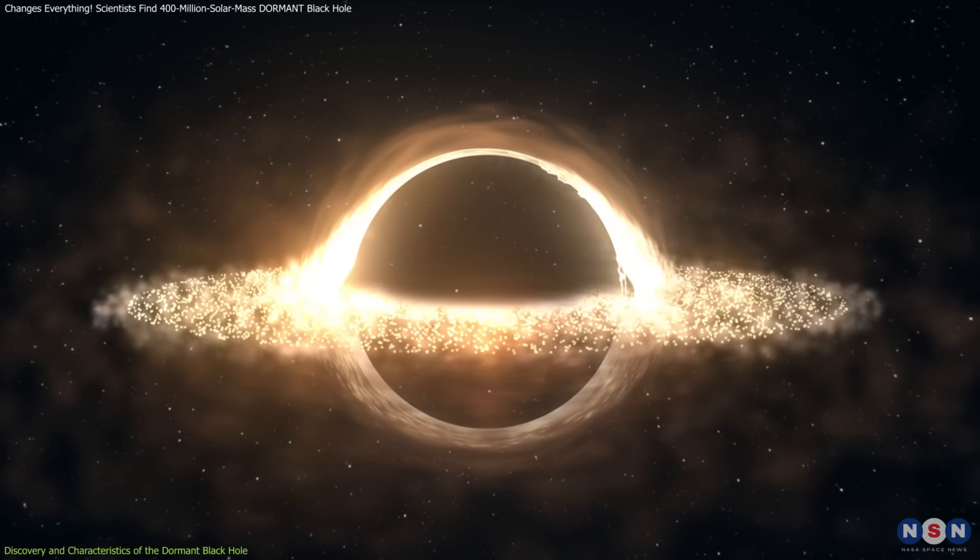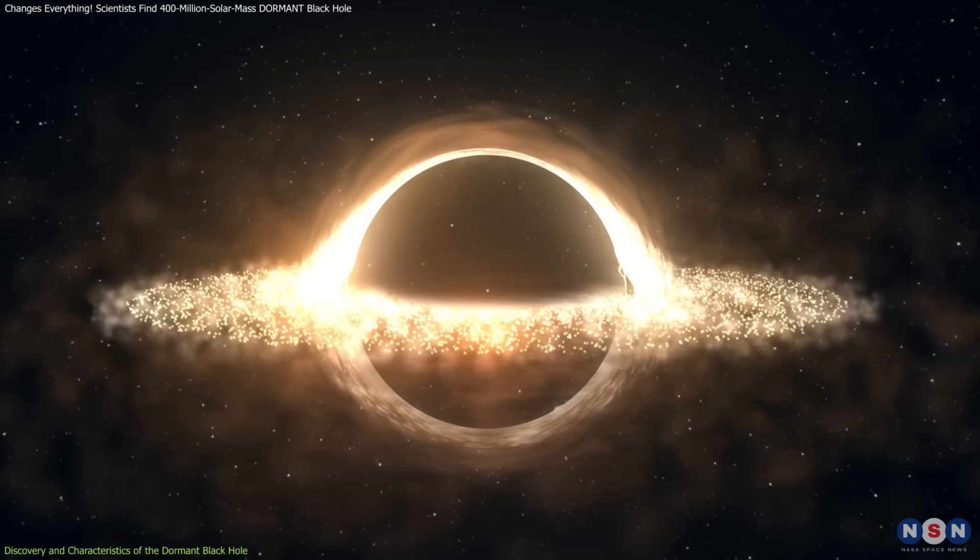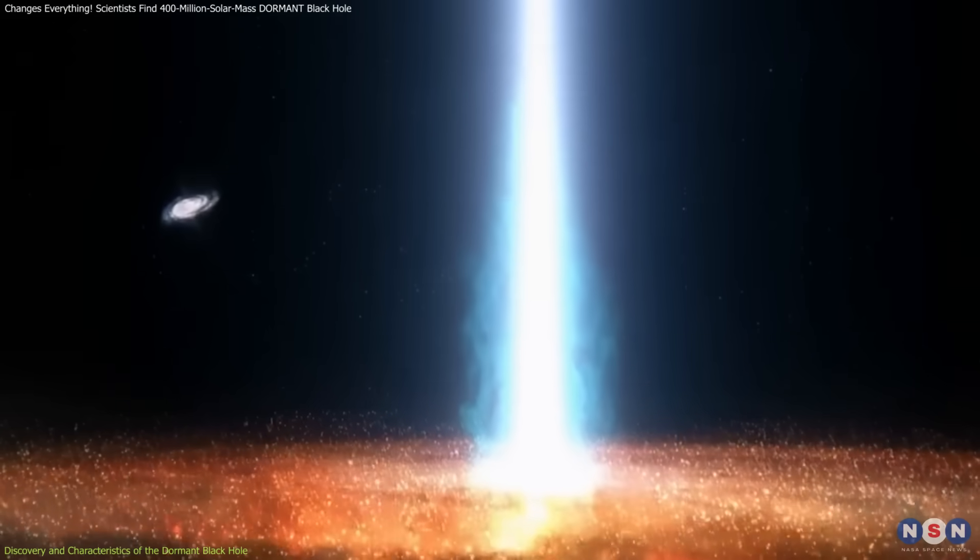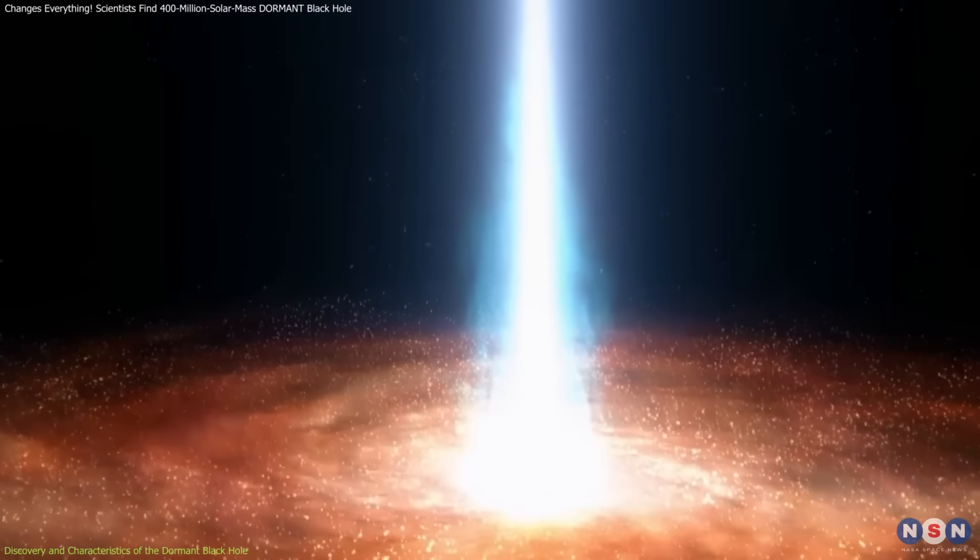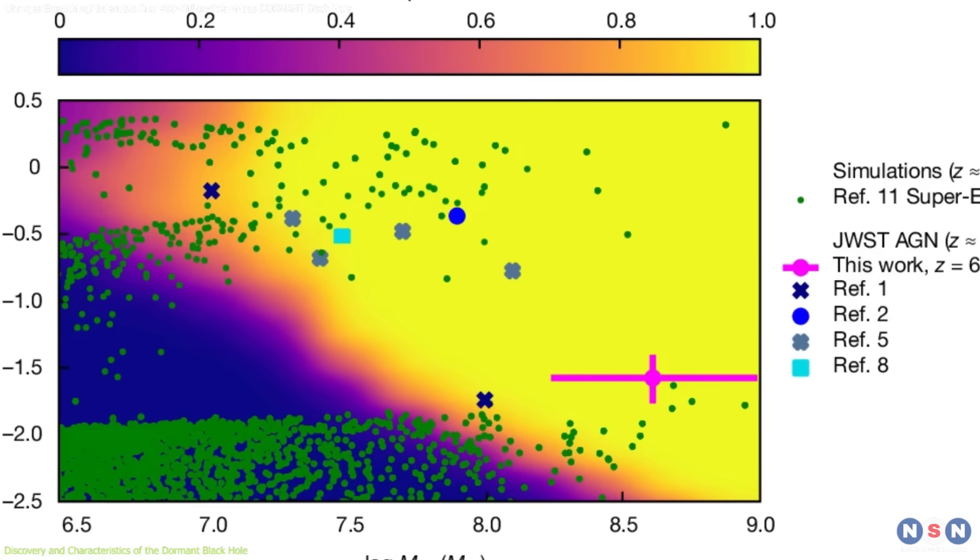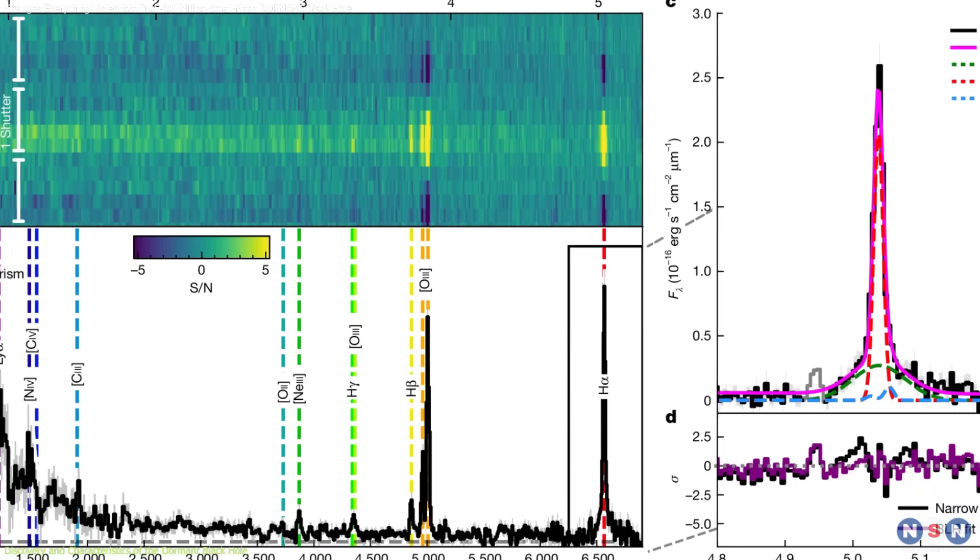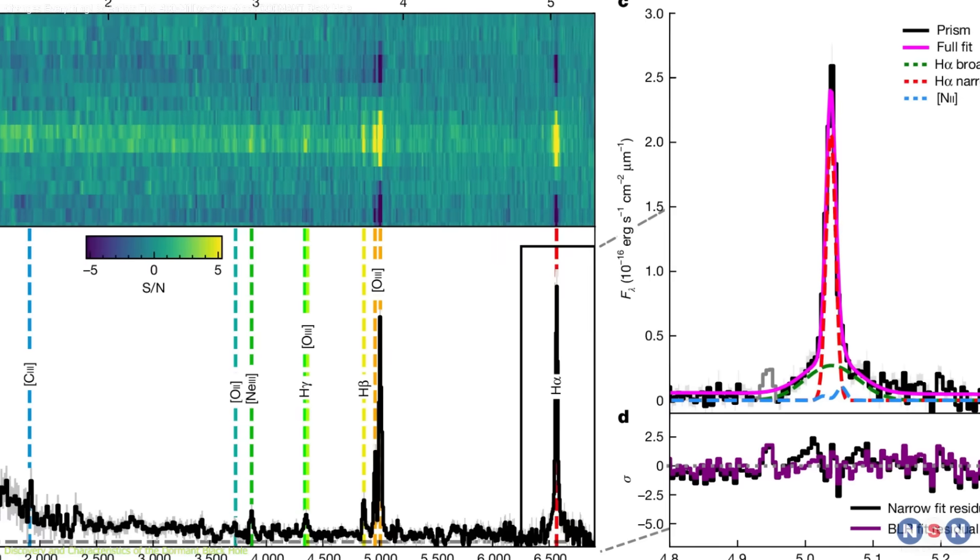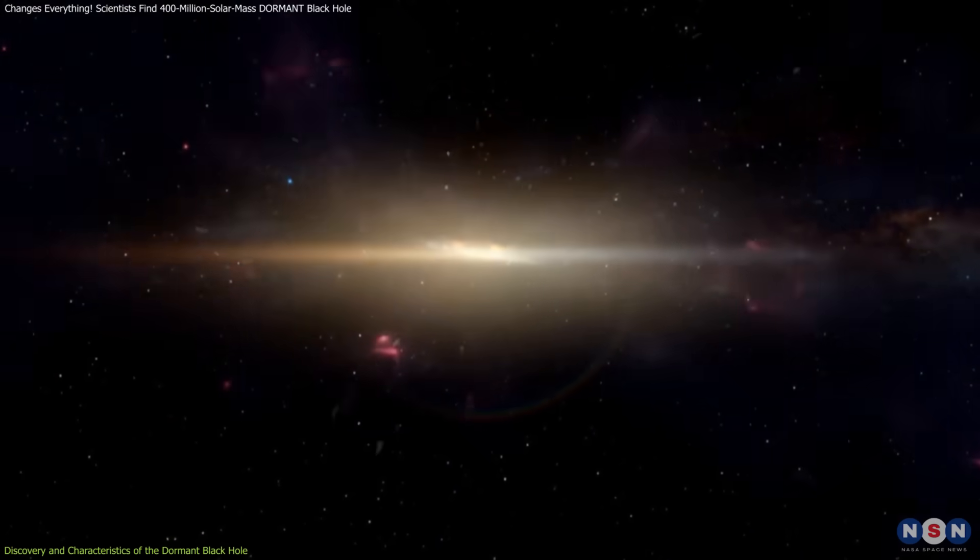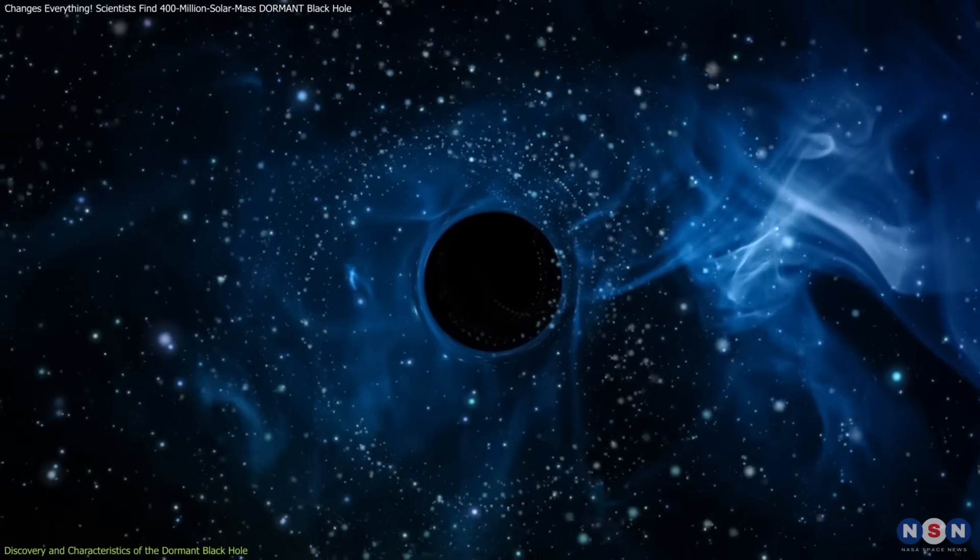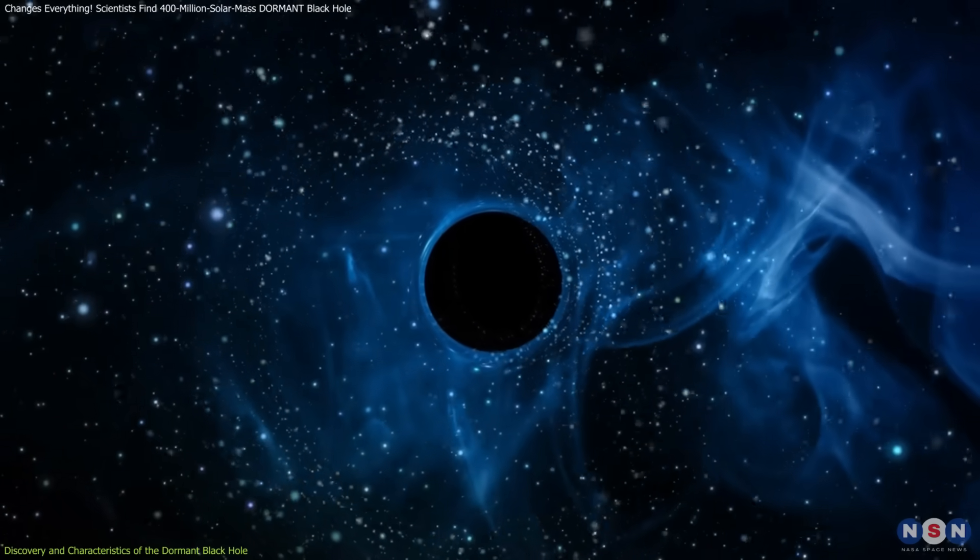Unlike active black holes, which are surrounded by glowing accretion disks, dormant black holes are elusive. They lack the high energy emissions that make active black holes easy to spot. So how was this one discovered? Using Webb's infrared imaging and spectroscopy, astronomers observed the host galaxy and noticed unusual spectral patterns. These patterns revealed the presence of a massive gravitational influence, a telltale sign of a black hole. The absence of typical emissions from an accretion disk confirmed its dormant state.